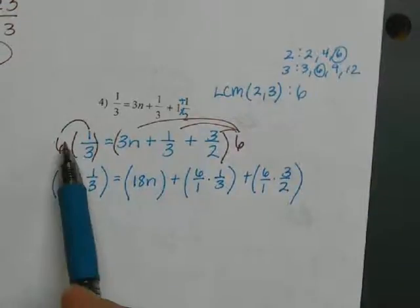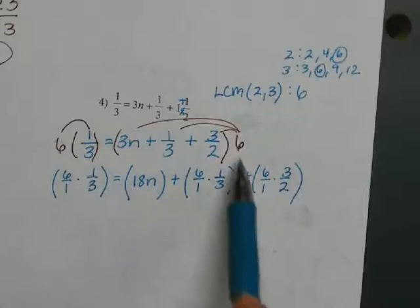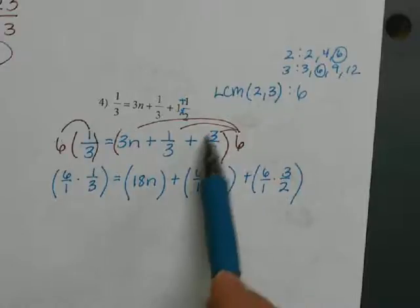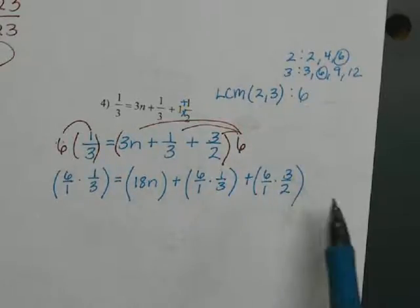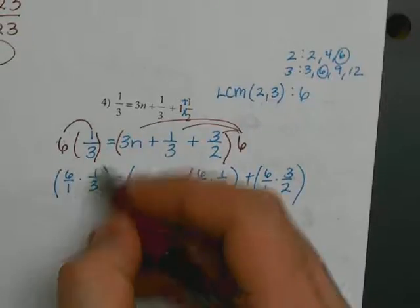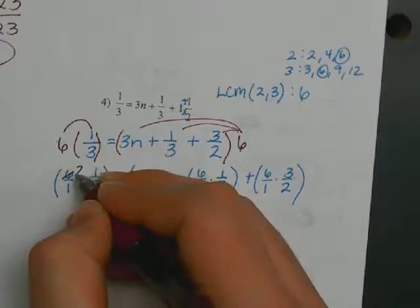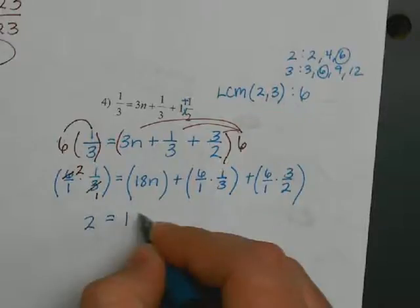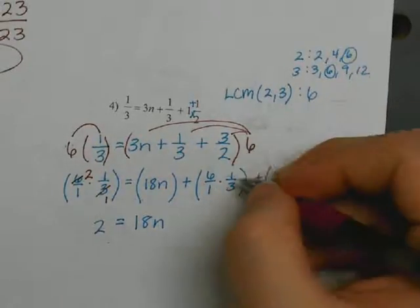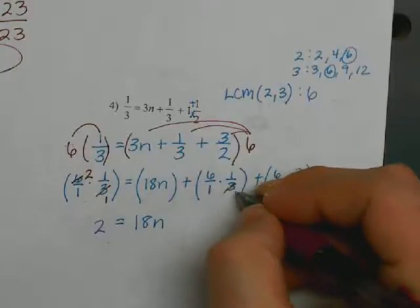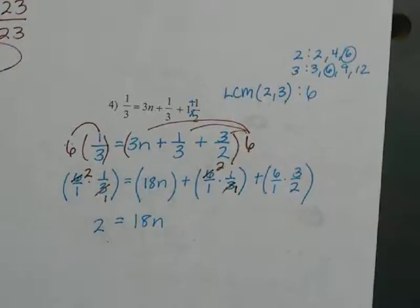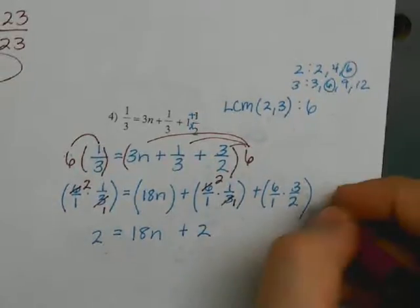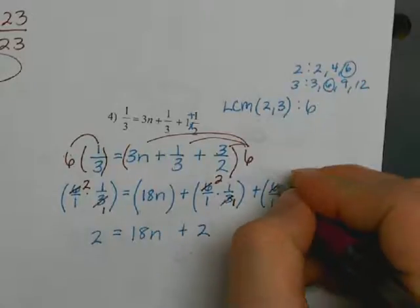So: six times three-n is 18n, six-over-one times one-third, and six-over-one times three-halves. Cross-simplifying: three goes into itself once and into six twice, so two times one over one times one is just two. For the three-halves term, two goes into itself once and into six three times, giving plus nine.